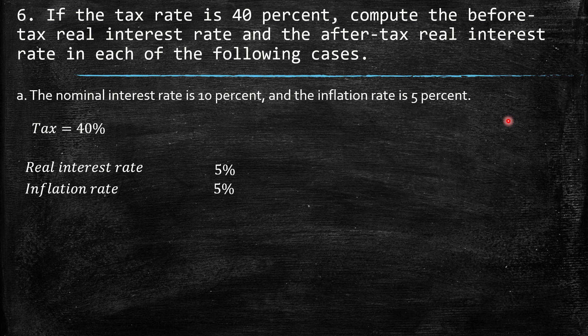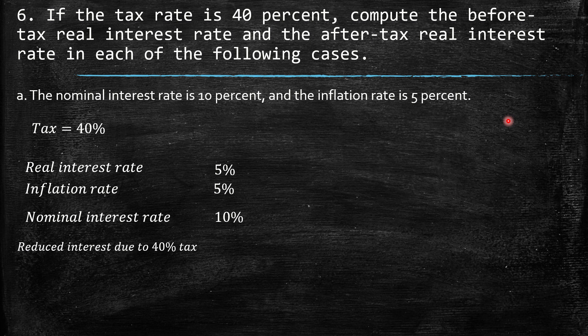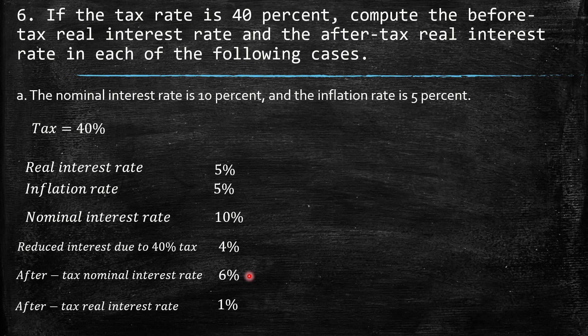Real interest rate plus inflation rate gives us the nominal interest rate provided by the exercise. Now, we reduce the interest due to the 40% tax. So 40% of 10% is 4%. The after-tax nominal interest rate is nominal minus this tax, so 10% minus 4% equals 6%. The after-tax real interest rate is 6% minus the inflation rate of 5%, giving us an after-tax real interest rate of 1%.